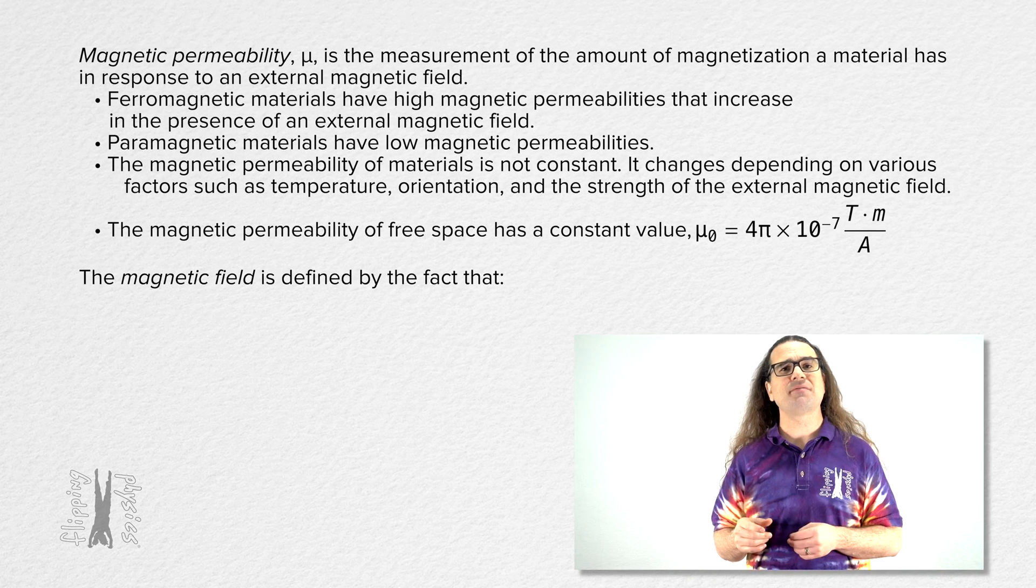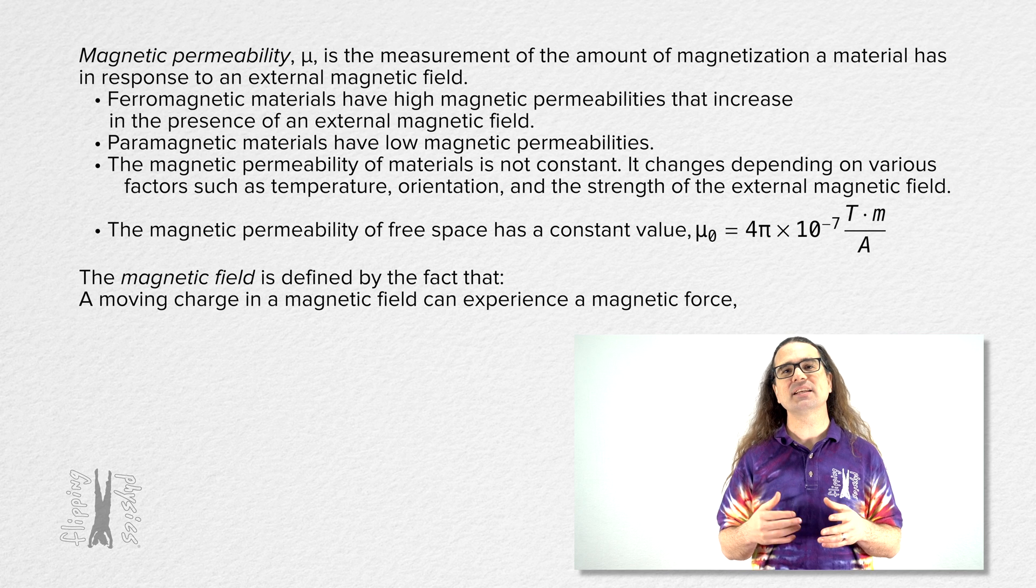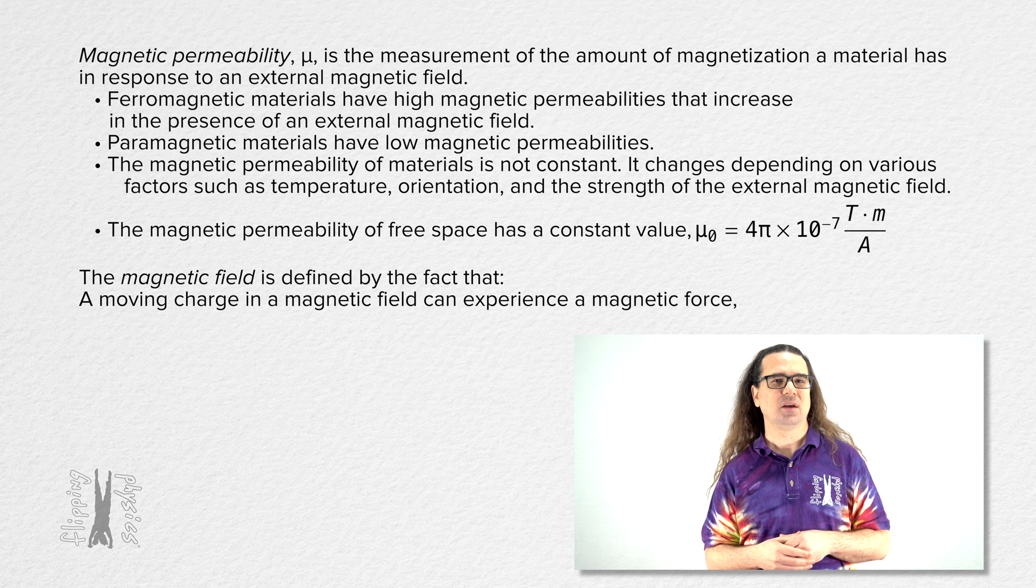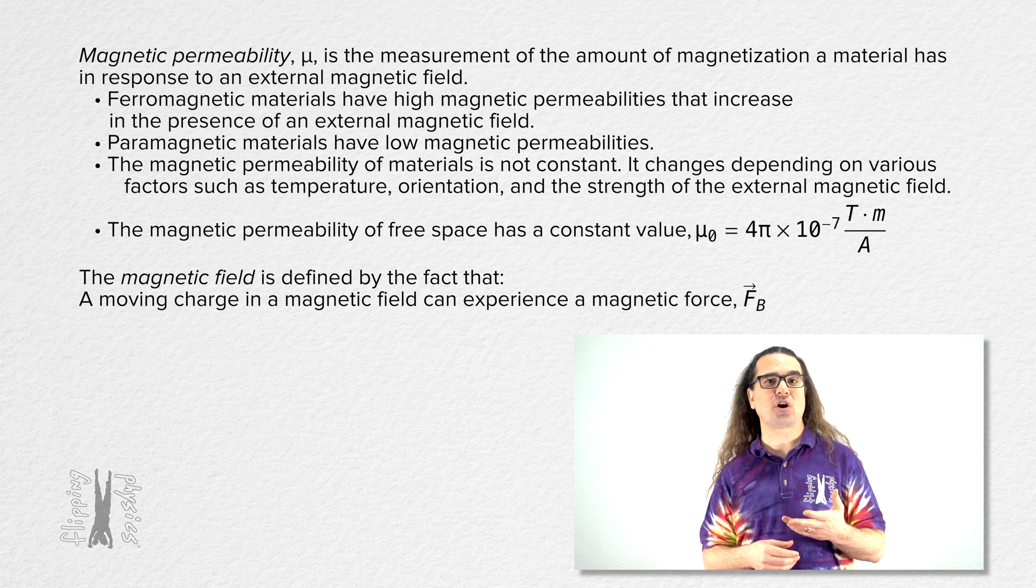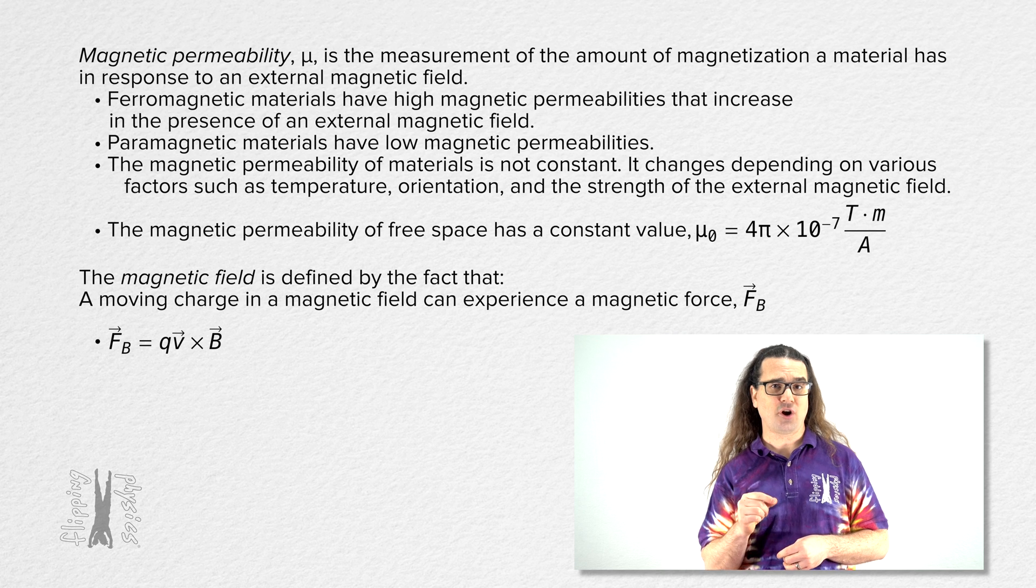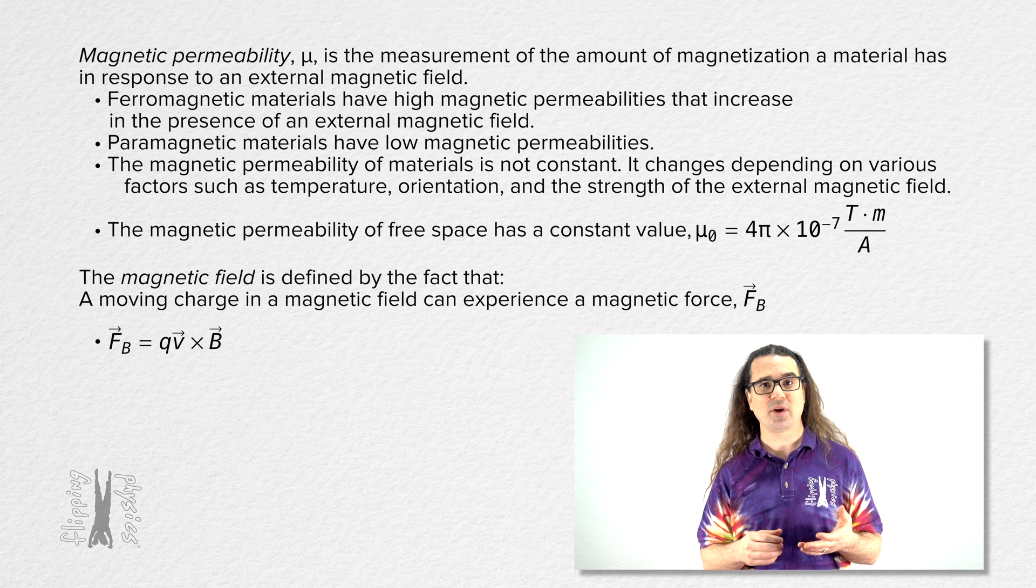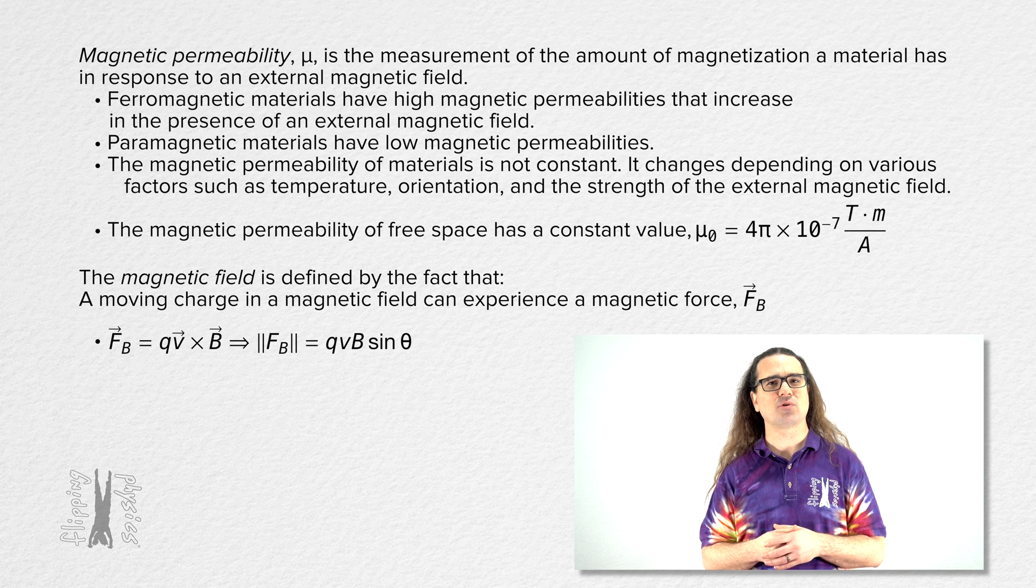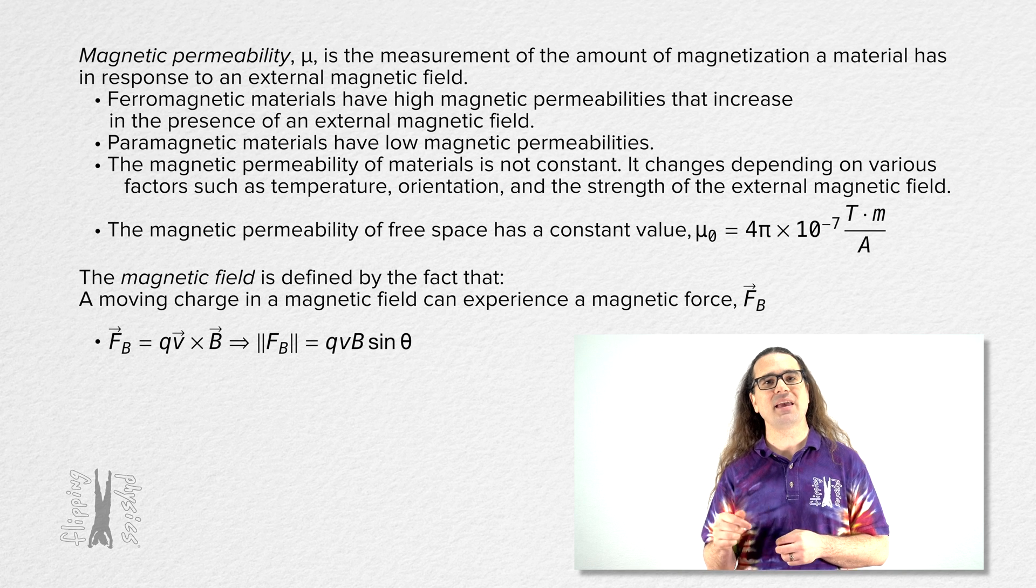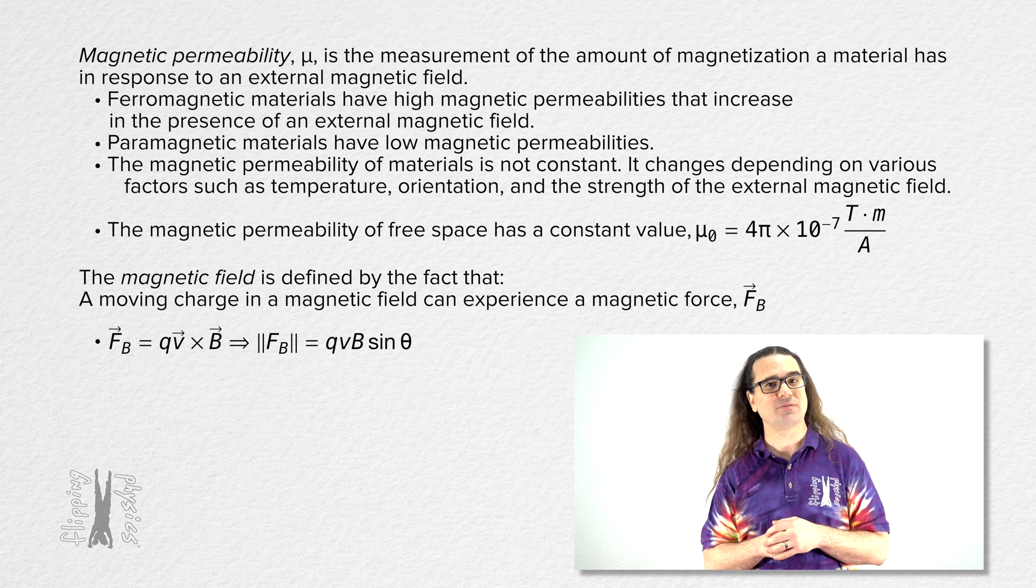A magnetic field is defined by the fact that a moving electric charge in a magnetic field can experience a magnetic force. The magnetic force an electric charge can experience when moving through a magnetic field, F_b equals the cross product of charge times velocity and magnetic field. Because this is a cross product, we also know the magnitude of the magnetic force equals charge times velocity times magnetic field times the sine of the angle between the direction of the velocity of the electric charge and the direction of the magnetic field.